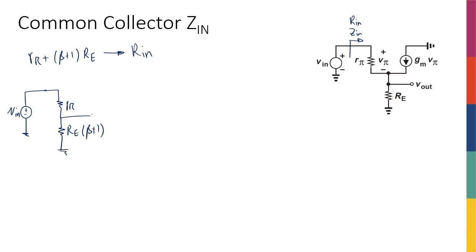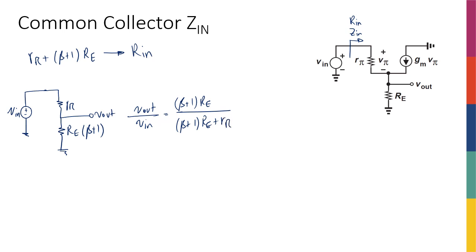Now where is V_out? V_out over V_in — it's a resistive divider. It's going to be (beta + 1) times R_e over (beta + 1) times R_e plus R_pi. So none of the stuff we did in the last slide was really necessary. We could have found this using the trick of taking a resistor in the emitter, multiplying it by (beta + 1), and putting it in series with the base.